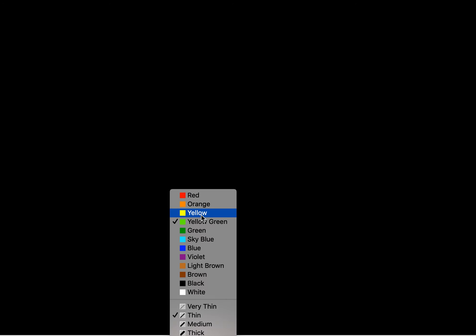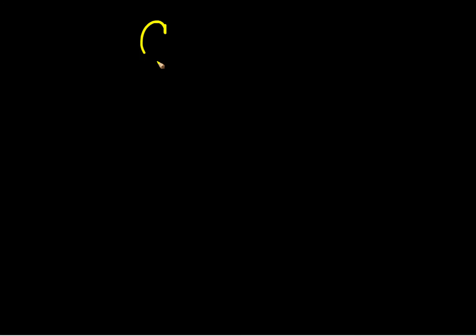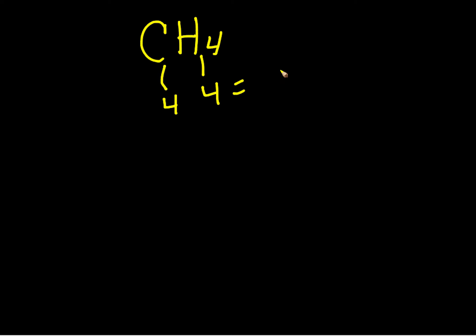We'll do CH4, methane. First, I need to count my number of valence electrons. Carbon is in group four, so I have four valence electrons. Hydrogen has one, but there are four of them, so four. So we're going to have eight electrons in our structure.